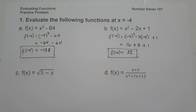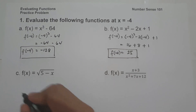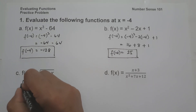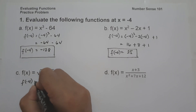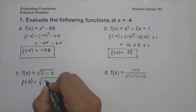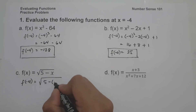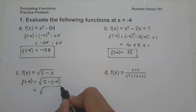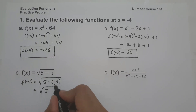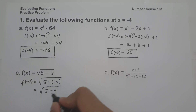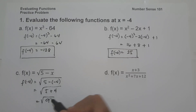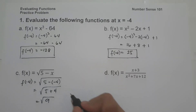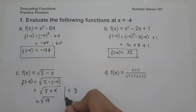On letter C, f of x is equal to the square root of 5 minus x. So f of negative 4 equals the square root of 5 minus negative 4. Negative times negative is positive, so this will be the square root of 5 plus 4, which is the square root of 9, and the square root of 9 is 3. This will be our answer.